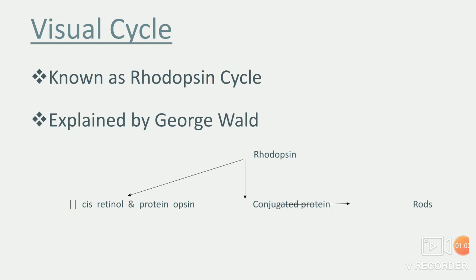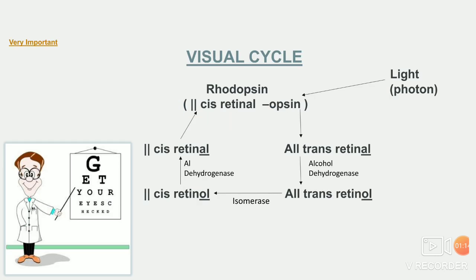Then हम देखेंगे visual cycle क्या है. Visual cycle को हम rhodopsin cycle भी बोलते हैं, और यह explain किया था by the scientist George Wald. So we'll see what is the visual cycle. In this diagram we see rhodopsin — that is 11-cis retinal opsin — this is the pigment of the eye. When light or photons strike the eye, then the rhodopsin gets converted.